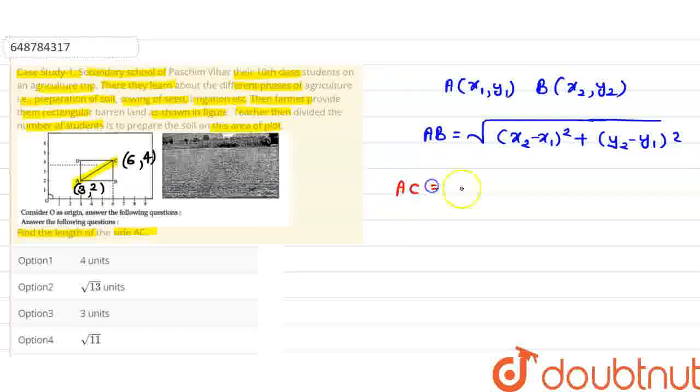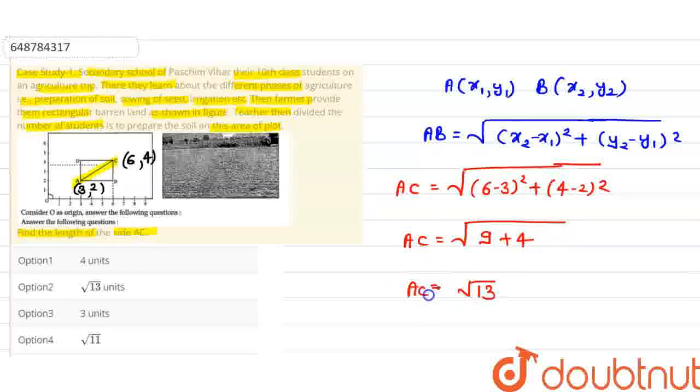So AC is the square root of X1, Y1 and X2, Y2. This is X2 minus X1, that is 6 minus 3, whole square plus Y2 minus Y1, that is 4 minus 2, whole square. Now we simplify it. So AC equals square root of (6 minus 3 is 3, whole square is 9) plus (4 minus 2 is 2, whole square is 4). So AC equals square root of 13. So AC is the length square root of 13. And this is the answer. We check the option. Option 2 is the right answer. Thank you.